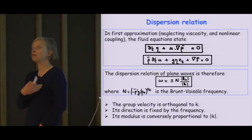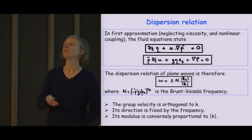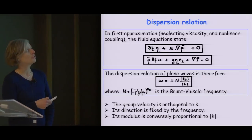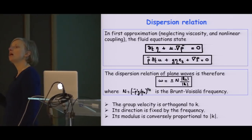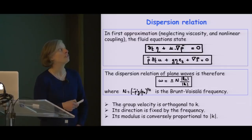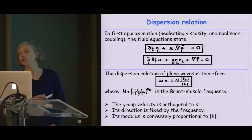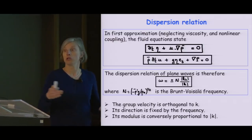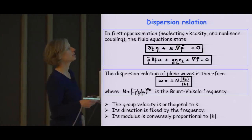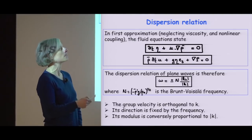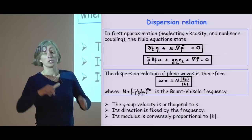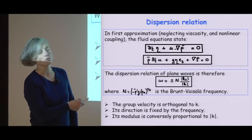We look for solutions as superpositions of plane waves — mathematicians say Fourier transform, physicists say plane waves, but it's the same thing. These plane waves have the form exp(i omega t + k·x), where k is the wave number and omega is the time frequency. Plugging this into the equations, we diagonalize the matrix and obtain eigenvalues equal to plus or minus N times |k_h| divided by |k|, where k_h is the horizontal part of the wave number. This is a simple computation.